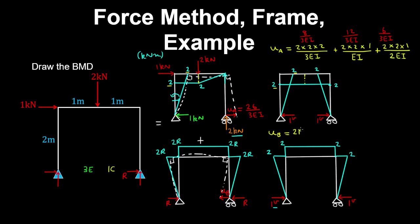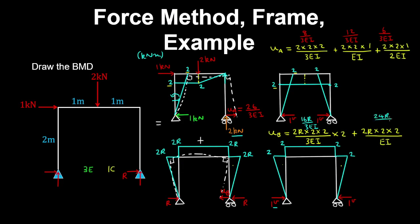On the left column we have 2R by a virtual moment of two by the length of the column on 3EI — the volume between two triangles. For the other column we have the same expression, so we multiply by two. For the beam we have 2R by the virtual moment of two, multiplied by the length of the beam on EI — the volume between two rectangles, which is a rectangular prism. The left term gives 16R/3EI, and the beam term gives 8R/EI or 24R/3EI. Therefore UB is 40R/3EI.